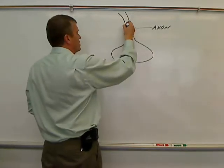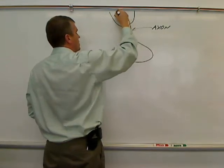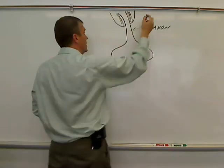The axon is wrapped in what's called a myelin sheath. So this wrapping is called myelin.